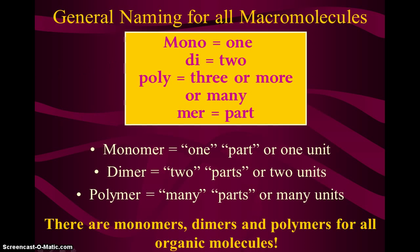Now when we're talking about these molecules, let's get some naming out of the way — some science terminology. Prefixes help us determine the number of parts of these different macromolecules. Mono means one, di means two, poly means three or more. So a monomer would be one part or one unit, a dimer would be two units or two parts, and a polymer would be three or more, meaning many parts. Make sure you understand mono versus di versus poly — it means the number of parts we're looking at.